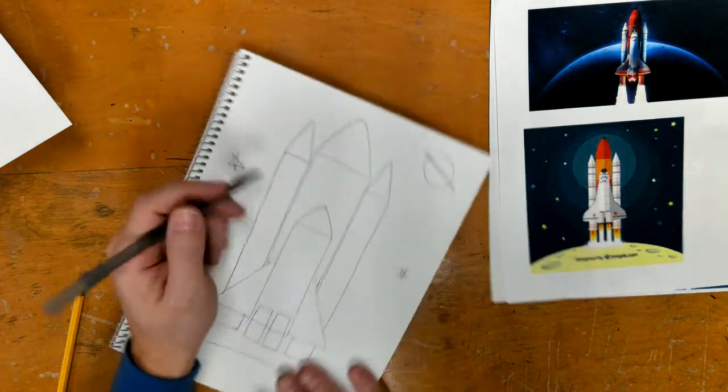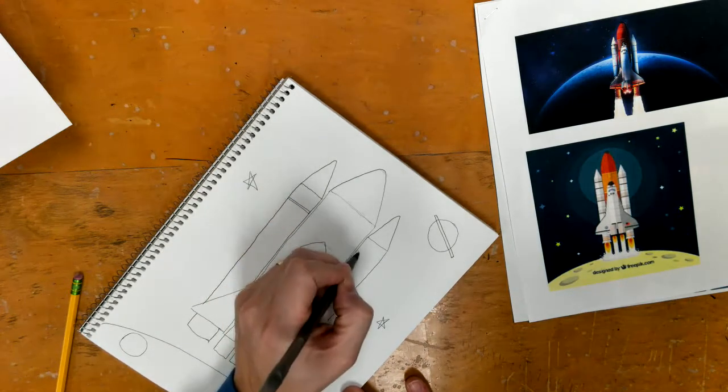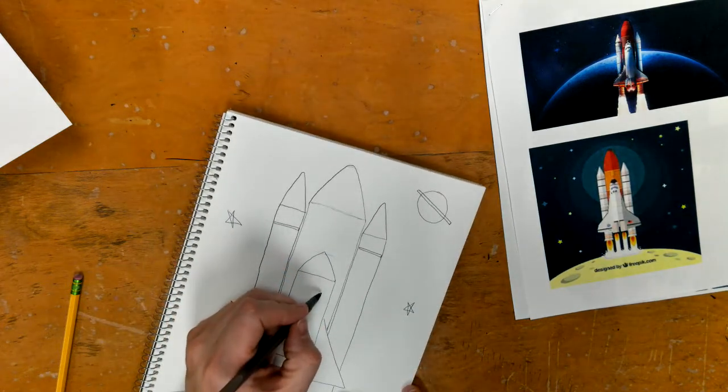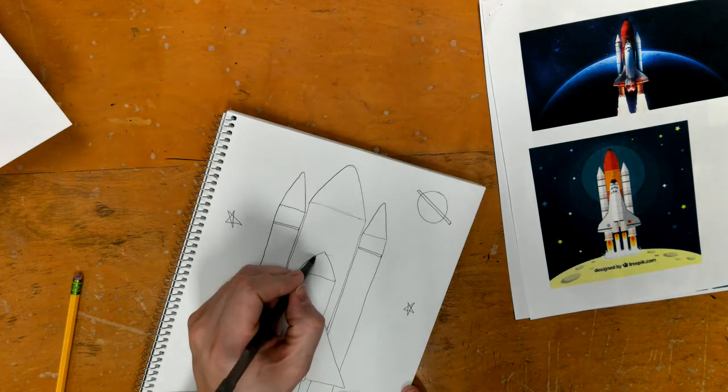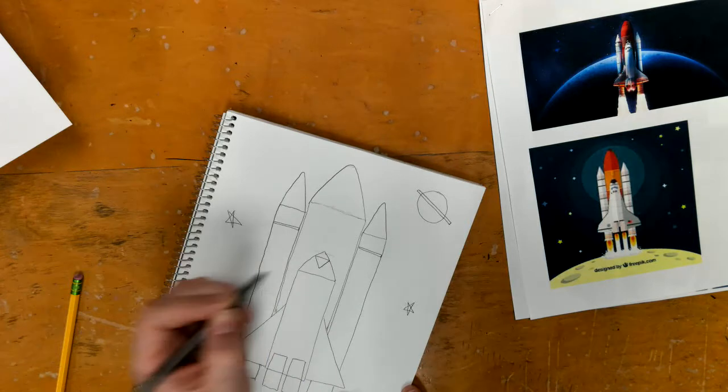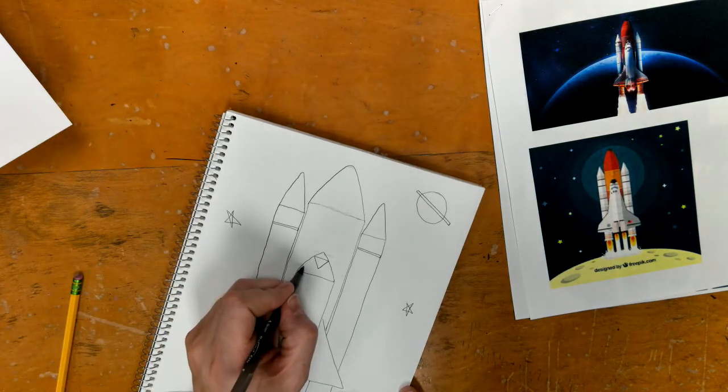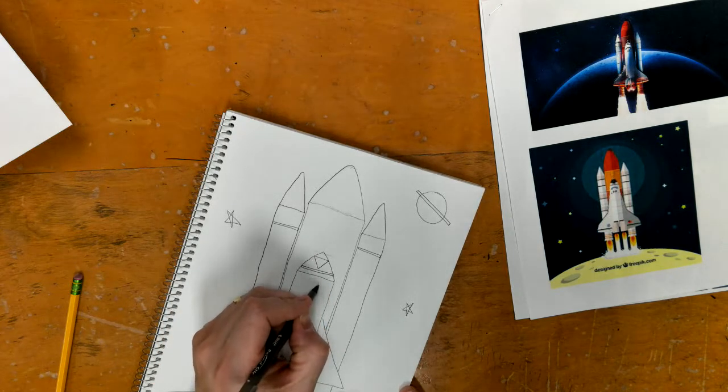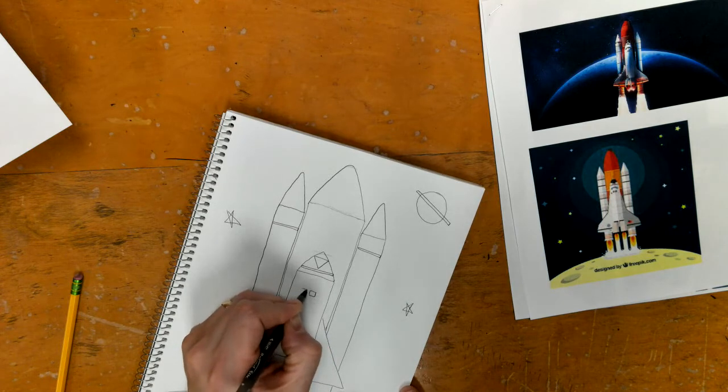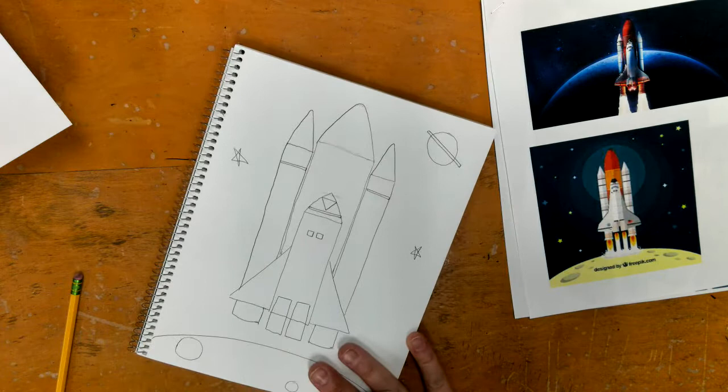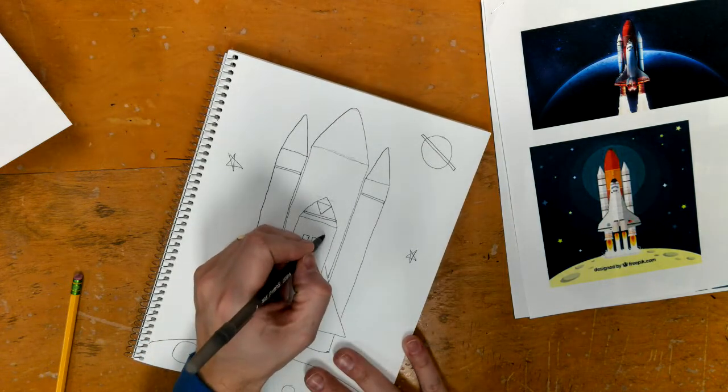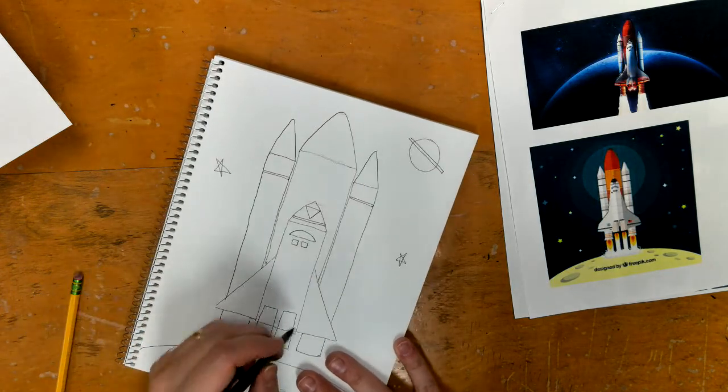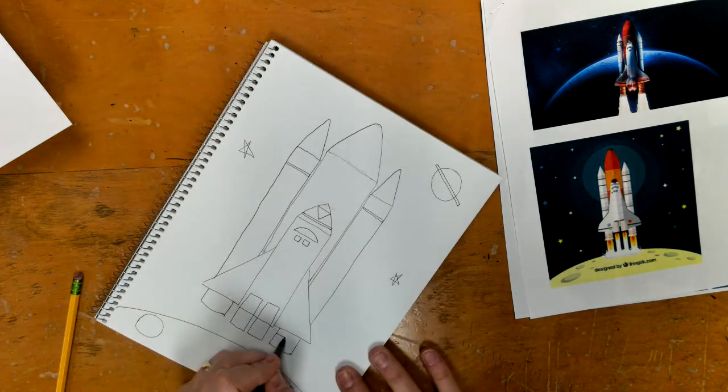We can go back in now and we can add details, so little rectangles for designs here. Our rocket has, make like an upside down triangle there. We can make another skinny rectangle there. It has some windows. We can make that out of squares. And then it has a half circle type of design. So I add that. There's lots of little lines.